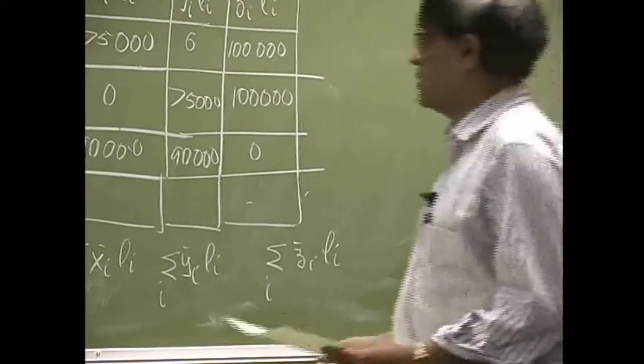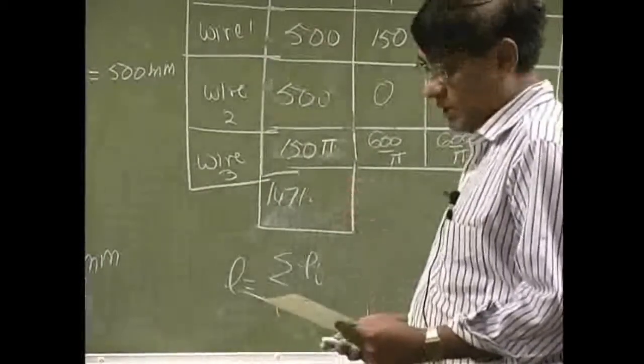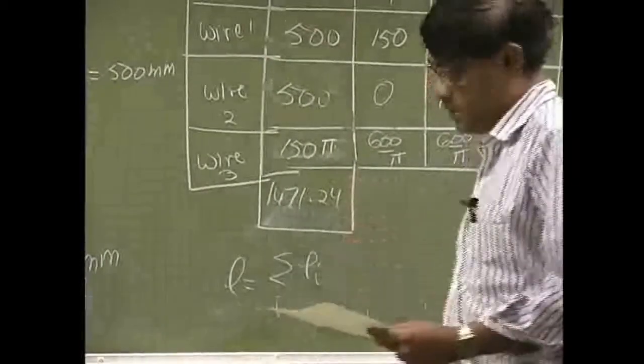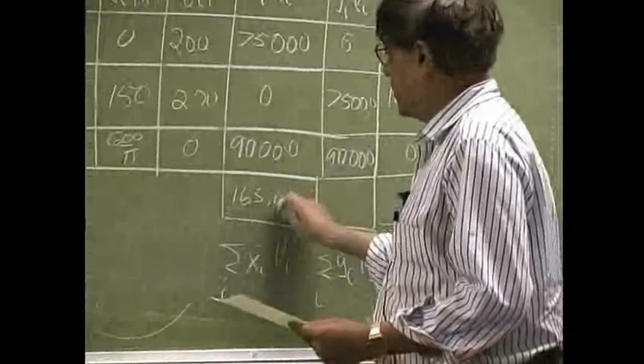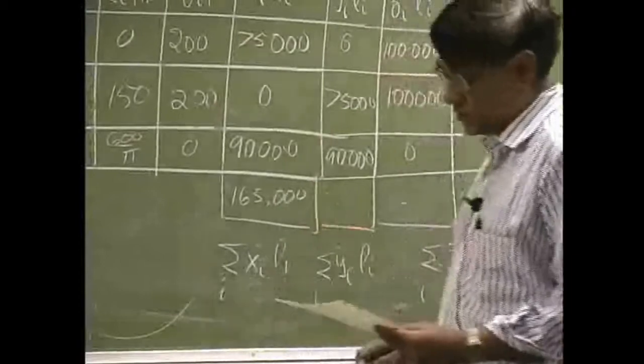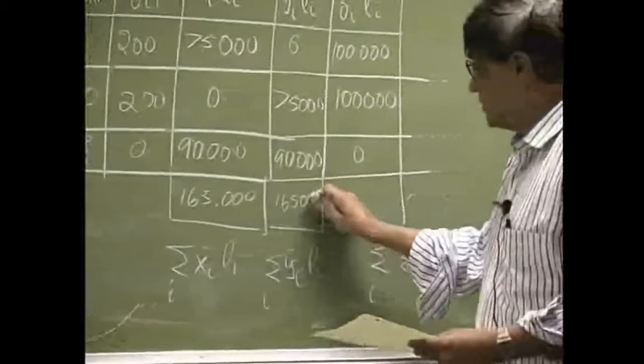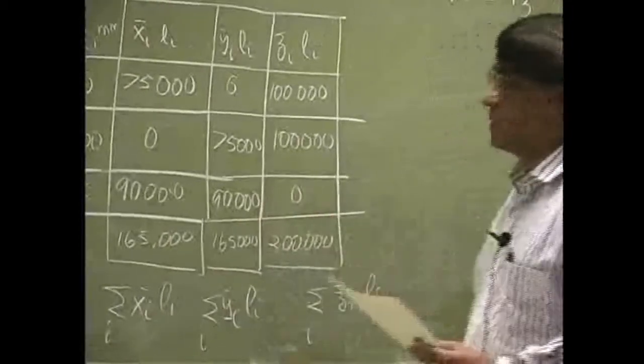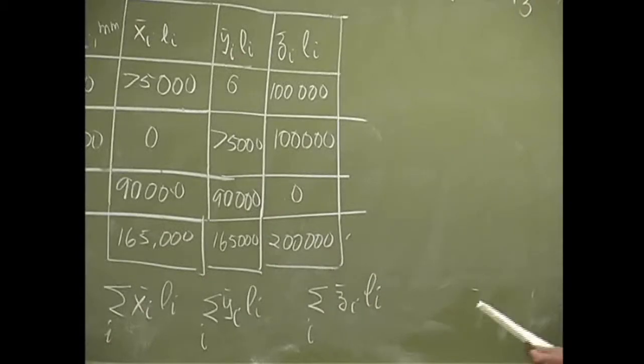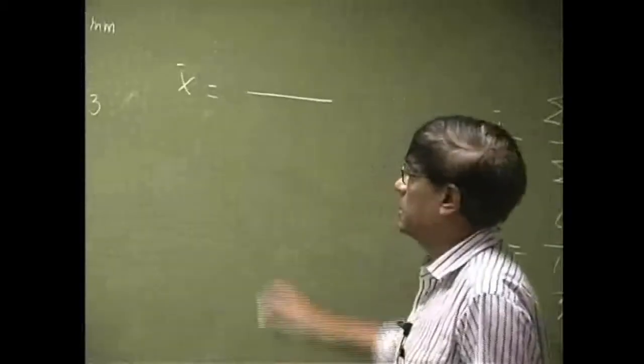If you go to the actual numbers, this is going to be 471.24, this one is 165,000, this one is the same 165,000, and this one is 200,000.